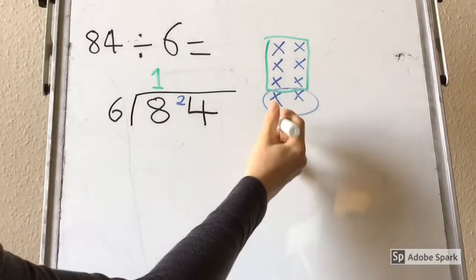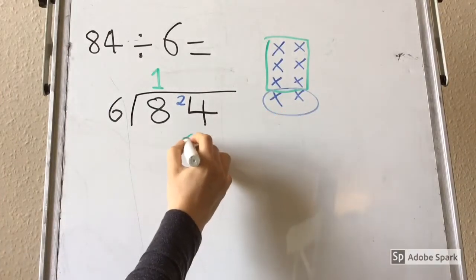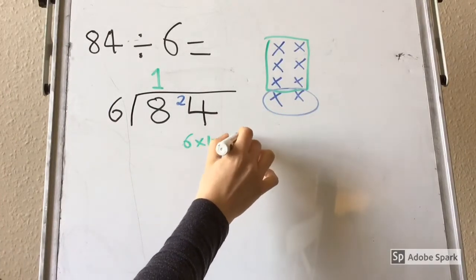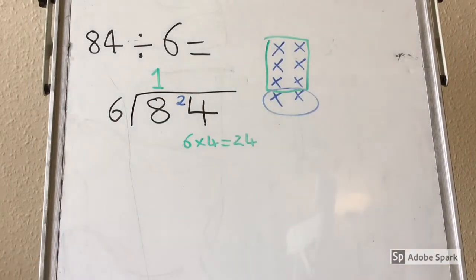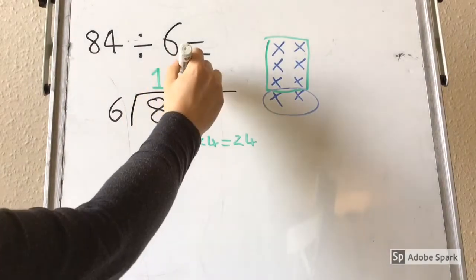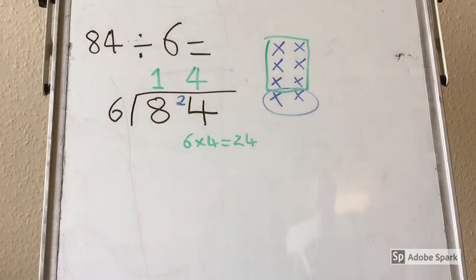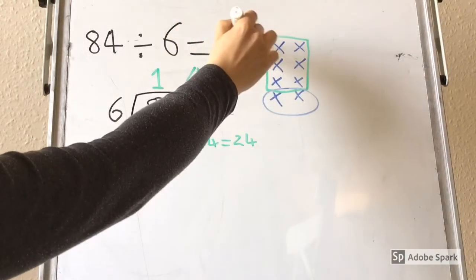Now I need to think about how many times 6 goes into 24. I know 6 times 4 is 24, so 6 goes into 24 four times. So I write my 4 above my bus stop, and I now know that 84 divided by 6 is 14.